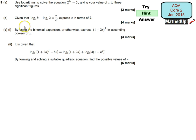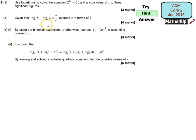For part B, it says given that this here, we need to express A in terms of k. For this part of the question, you want to try and write the left-hand side as a single logarithm. You then want to write it in a form that doesn't involve logarithms. Write it as a single logarithm first of all, and then you should be able to write this equation without logarithms.